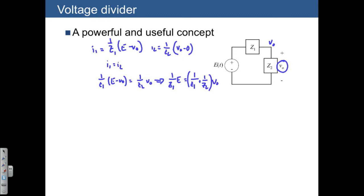If we solve for VO, what we would end up finding is that VO is equal to—first, let me point out that this quantity is the same as Z1 plus Z2 over Z1 times Z2. So we just have to flip that over, and what we find is VO equals Z2 over Z1 plus Z2 times E.